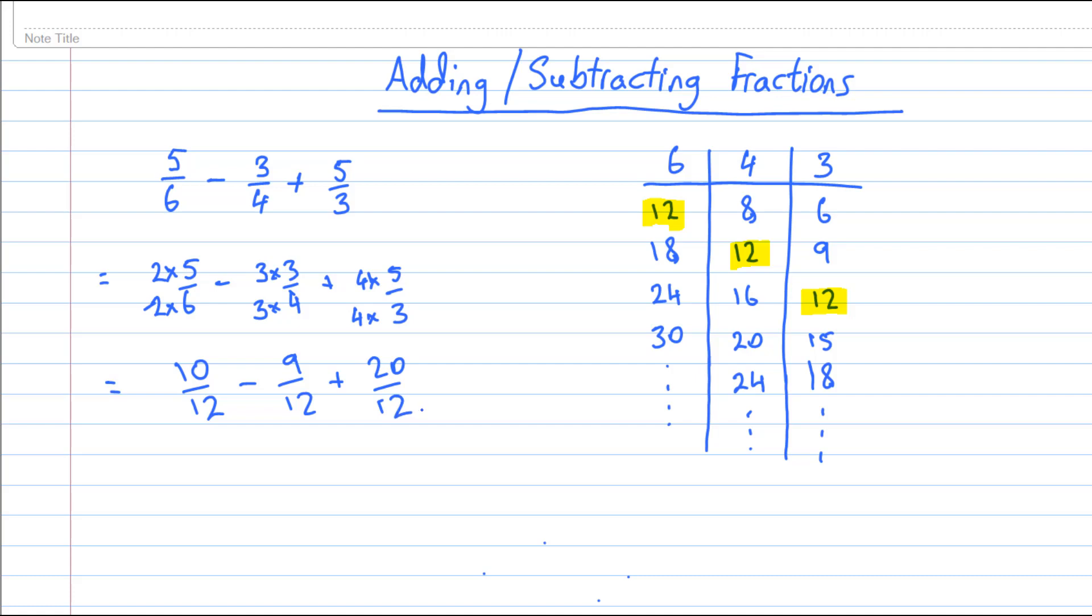So 10 minus 9 plus 20. Now 10 plus 20 is 30, minus 9 is 21, so our final answer for this problem is going to be 21 over 12.